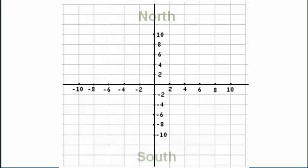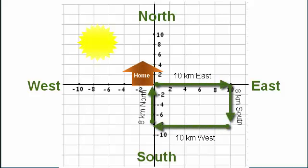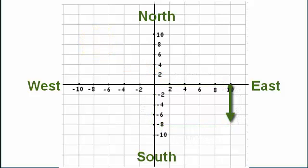Here I have a graph where the y-axis represents the north and south direction, while the x-axis represents the east and west direction. I have transferred our journey, which consisted of four displacement vectors, onto this graph. The length of the respective displacement vectors have been drawn out in proportion to the distance traveled. If I focus only on the displacement vector 8 kilometers south, you will find that the tail of the vector is positioned at (0, 10), while the head of the vector is positioned at (0, 10, negative 8).